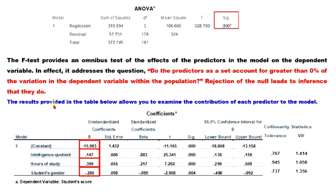The results in the coefficients table allow you to examine the contribution of each predictor to the model. The constant is minus 15.983, which is the intercept when all other variables are zero. Intelligence quotient coefficient is 2.047, hours of study is 0.399, and gender is minus 0.286.